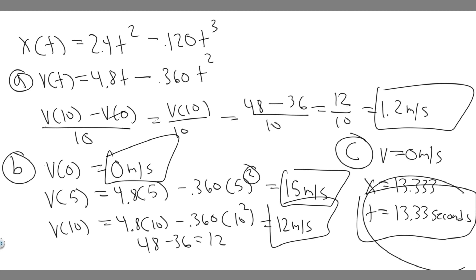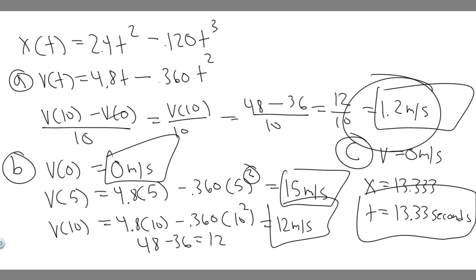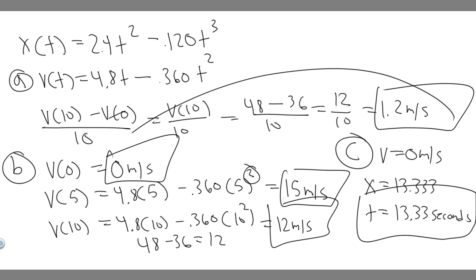So to summarize: the answer to part a is 1.2 meters per second average velocity, part b gives instantaneous velocities of 0, 15, and 12 meters per second, and part c gives 13.33 seconds. Hopefully you found this video useful.